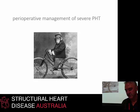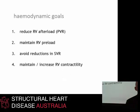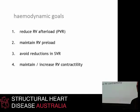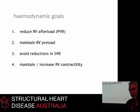So how can we manage these patients? Having heard the preceding, the haemodynamic goals are fairly straightforward. We try to address all the underlying things we can change: we try to reduce right ventricular afterload, maintain right ventricular preload, avoid reductions in systemic vascular resistance — which is critically important — and we can give inotropes to maintain or increase right-sided contractility.